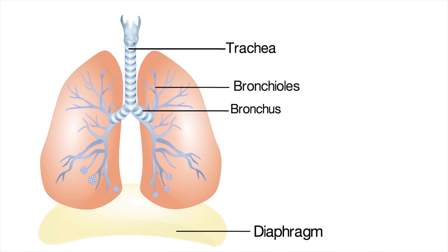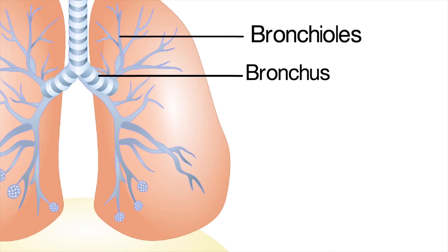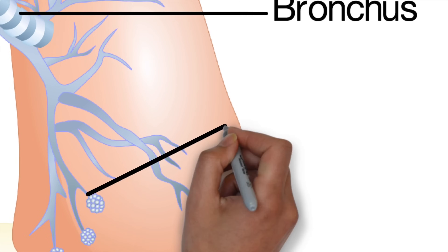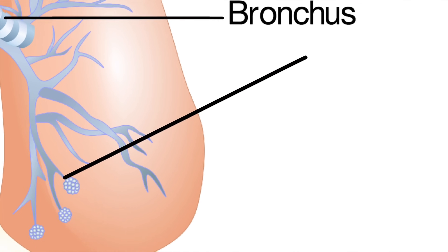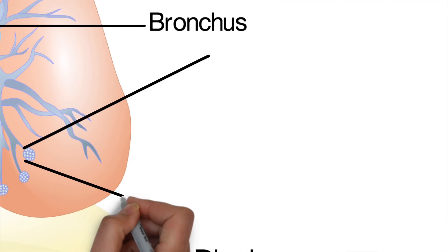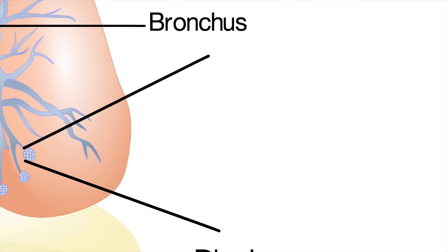The bronchioles carry the air throughout the lungs and take it to its final destination where gas exchange happens — areas called the alveoli. The alveoli are where oxygen enters the blood and carbon dioxide leaves the blood.